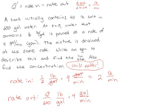We also know that because it's draining and adding at the same rate, there's always 600 gallons in the tank at a time. That's not always the case, but in this particular case there's always 600 gallons. So we can simplify this to say that we have Q over 150 pounds per minute going out.